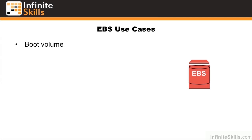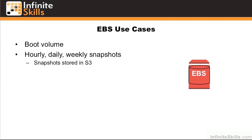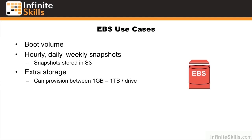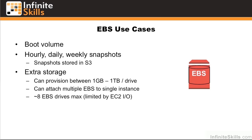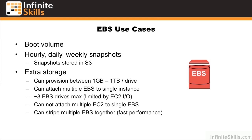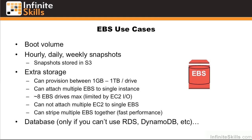Let's look at some of the EBS use cases. The first and best case is as a boot volume. You can do hourly, daily, and weekly snapshots, and the snapshots are stored durably in S3. You can also use it whenever you need extra storage — you can provision between 1GB and 1TB per EBS volume, and attach multiple EBS volumes to a single instance. The sweet spot typically maxes out at about 6 to 8 EBS volumes, limited by the EC2 I/O — the larger the instance, generally the more volumes you can attach. You cannot, however, do the reverse: you cannot attach multiple EC2 instances to a single EBS volume. You can stripe multiple EBS volumes together for fast performance. You may also want to consider using EBS as a database, but really only if you decide you cannot use RDS, DynamoDB, SimpleDB, or another one of the offerings that Amazon provides.